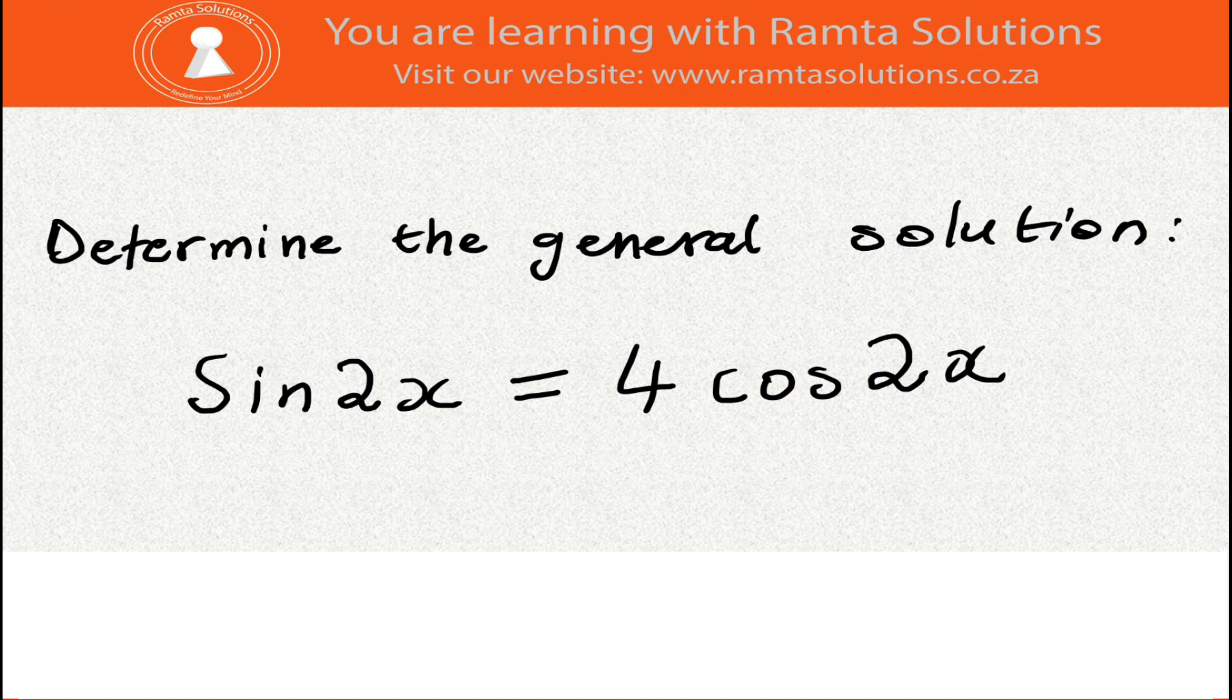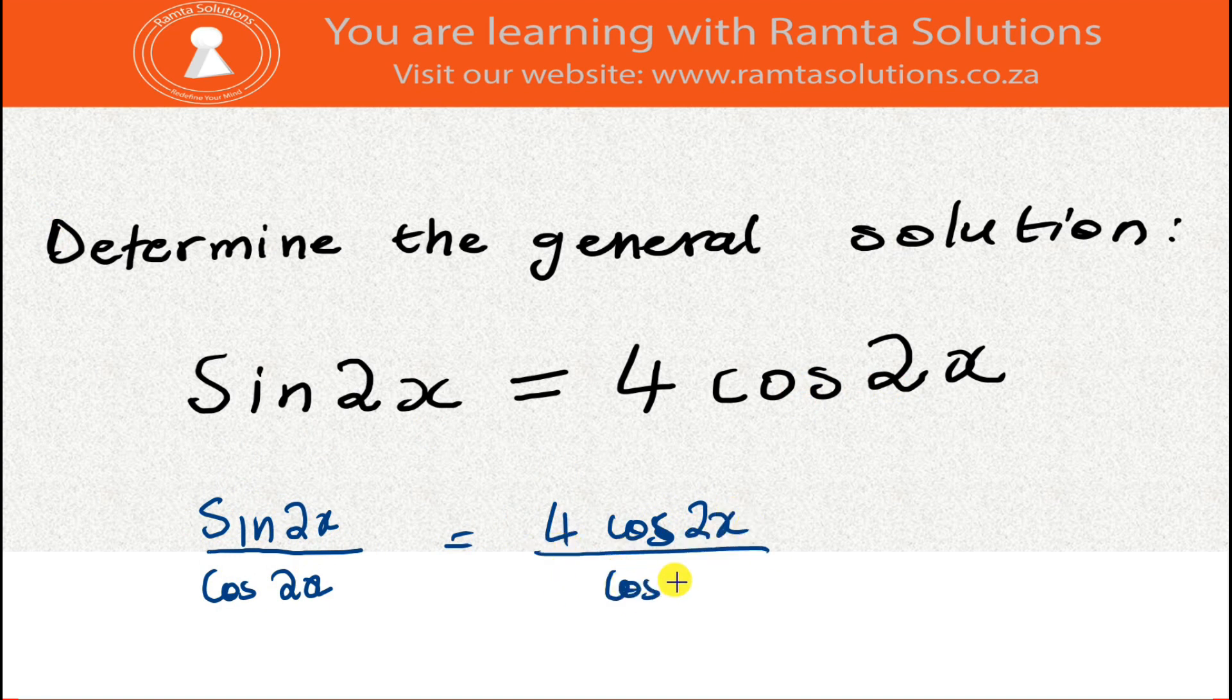You simply divide everything by cos 2x, so you'll have sin 2x over cos 2x, which equals 4 cos 2x over cos 2x. The cos 2x's cancel out, and sine over cosine is tangent, so this becomes tan 2x equals 4.